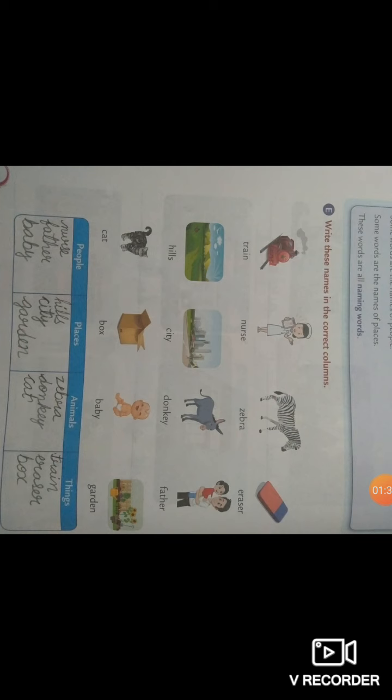Next we have zebra. Zebra is an animal, so you will write down zebra in animals column. Next is eraser, that is a thing, so we will write it down in things column.